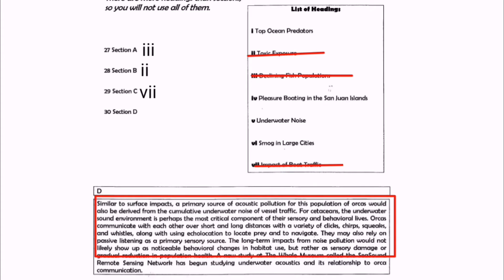Let's read the last paragraph D. Similar to surface impacts, a primary source of acoustic pollution for this population of orcas would also be derived from the cumulative underwater noise of vessel traffic. For orcas, the underwater sound environment is perhaps the most critical component of their sensory and behavioural lives. Orcas communicate — communicate means talk or make noise with each other — over short and long distances with a variety of clicks, chirps, squeaks and whistles, along with using echolocation to locate prey and navigate. So this paragraph is about the sounds or noise of orcas.